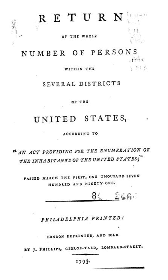For the 1870 Census, the color and racial question was expanded to include 'C' for Chinese, which was a category that included all East Asians, as well as 'I' for American Indians.